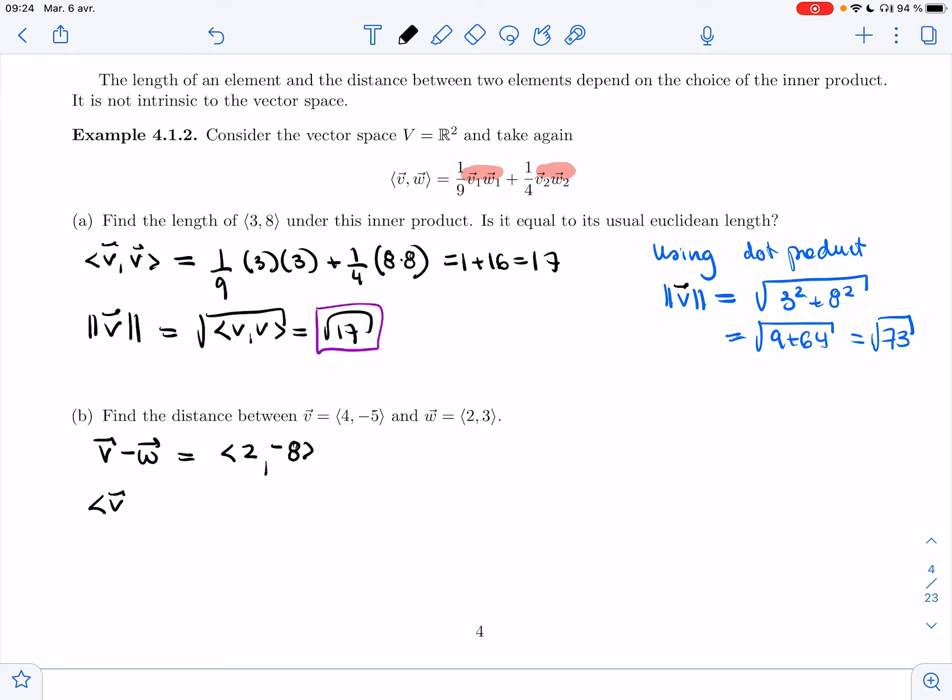I need to compute <v minus w, v minus w>. So that's one ninth of 2 squared plus one fourth of minus 8 squared. That's four ninths plus same as above, so that's still 16.